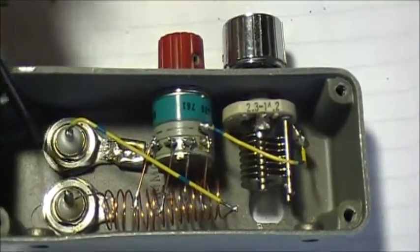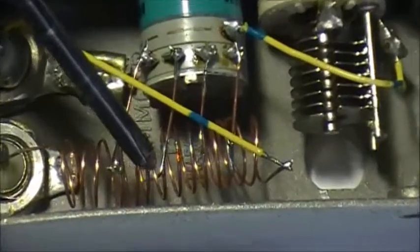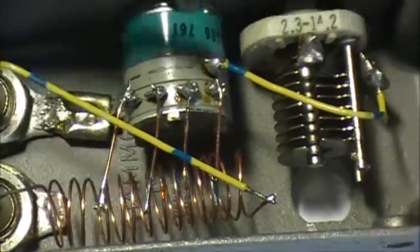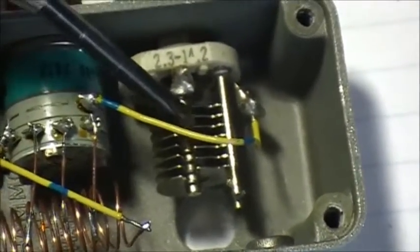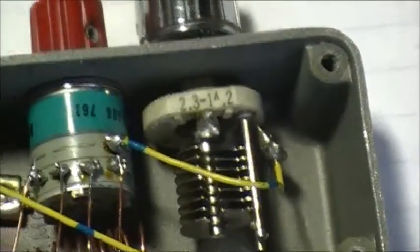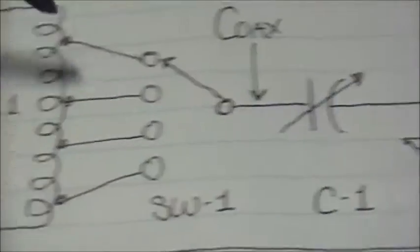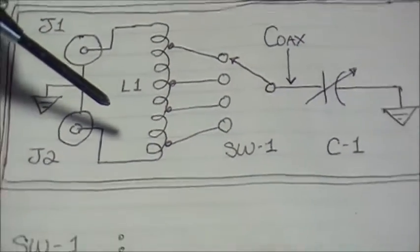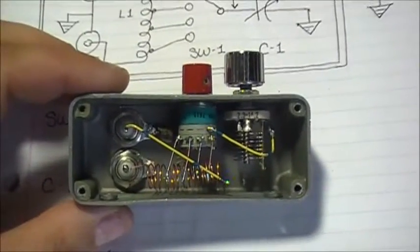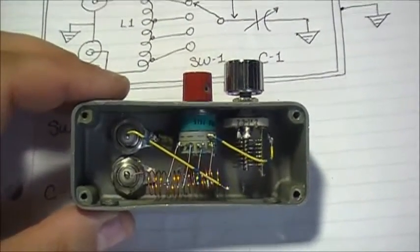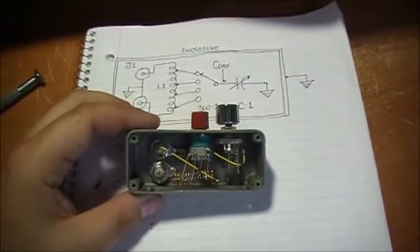Again, one BNC, another BNC, here's your coil right here, the switch, here's your jumpers, and the tuning cap which goes to ground. As you can see - switch, capacitor, ground. Easy and compact.